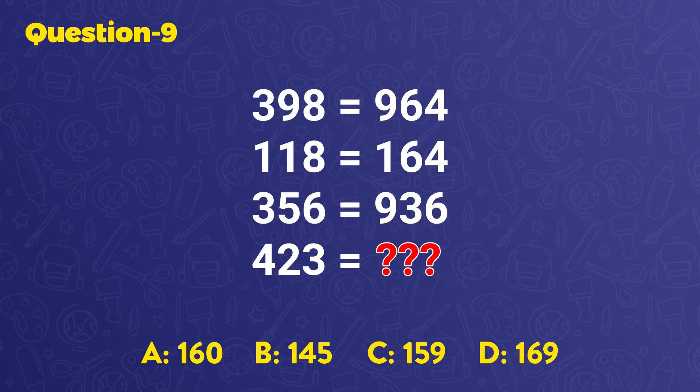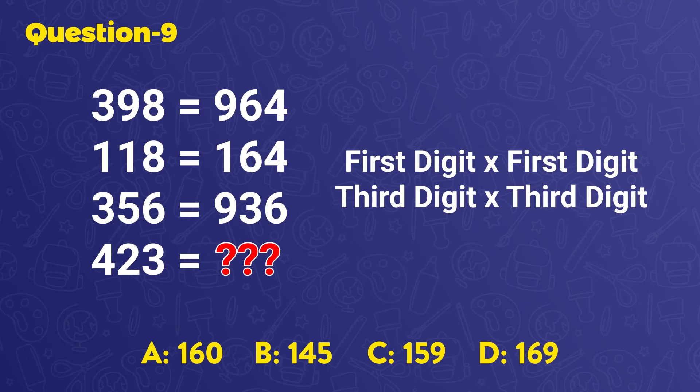First, let's think about the order of these numbers, but remember something important. The second digit is insignificant for the result. To get the right answer, do this operation. First digit times first digit and third digit times third digit.